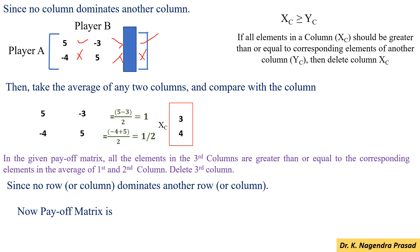And also here, no row or column dominates another row or column. So, now the payoff matrix has player A with 2 strategies and player B with 2 strategies.